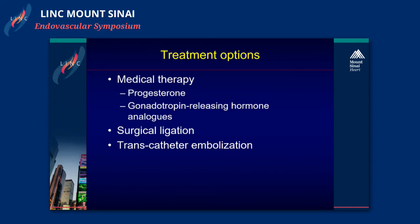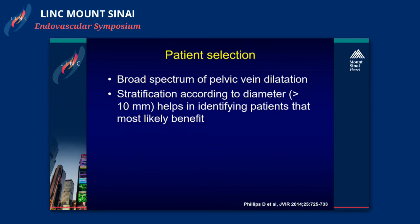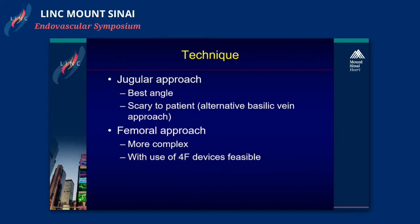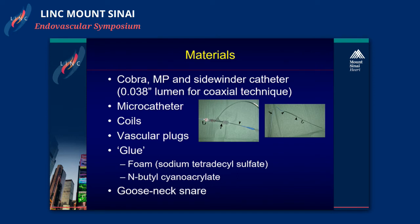Treatment options are many — medical therapy or surgical ligation — but I will focus on transcatheter embolization. Patients should be selected; stratifying by diameter more than 10 millimeters helps identify patients that will benefit most. I hardly ever use a jugular approach; it provides a good angle but is very scary to the patient. I typically use the femoral approach, although it's technically more complex using four French devices. I use a Cobra multipurpose and sidewinder catheter, an 038 lumen for a coaxial technique with a microcatheter, and then coils, plugs, and glue should be at hand, along with a gooseneck snare in case of problems with coil migration.